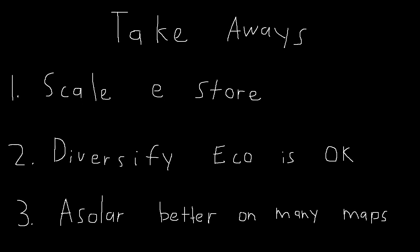Number two is, diversifying your economy is an acceptable strat. Even on very high wind maps like Glitters, if there's a lot of volatility, a legitimate argument can be made to mix in even just a few a-solars to smooth out bumps. And number three, on maps with lower wind ranges, it just seems like a-solars are objectively better.